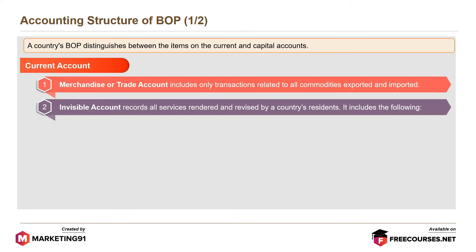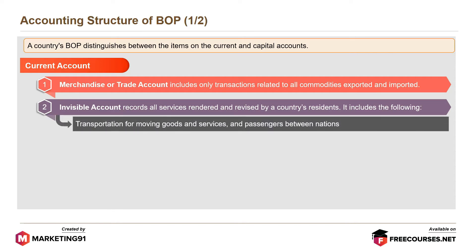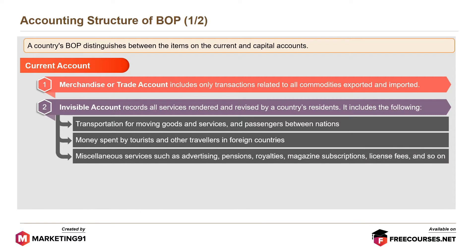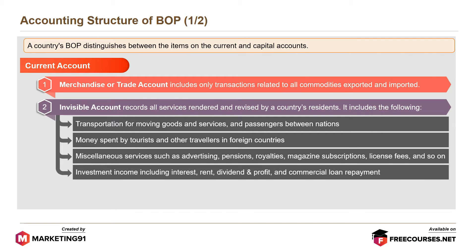The Invisible account includes the following: transportation for moving goods, services and passengers between nations; money spent by tourists and other travellers in foreign countries; miscellaneous services such as advertising, pensions, royalties, magazine subscriptions, license fees and so on; and investment income including interest, rent, dividend, profit and commercial loan repayment.